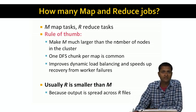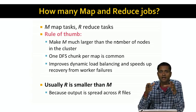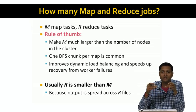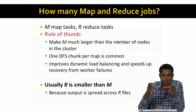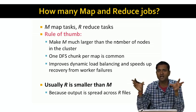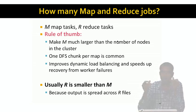On the other hand, the number of reducers R is usually smaller than M, and is usually even smaller than the total number of nodes in the system. This is because the output file is spread across R nodes, and it's usually convenient to have the output spread across a small number of nodes rather than a large number of nodes. So R is typically set to a smaller value than M.